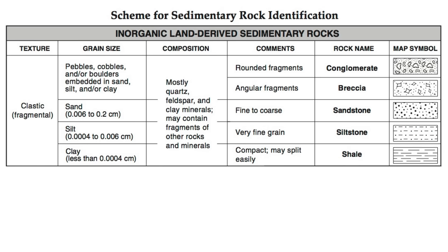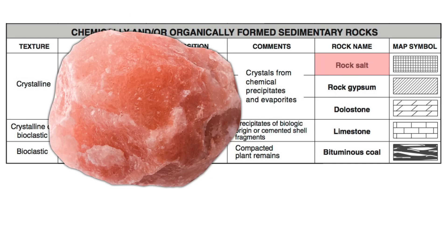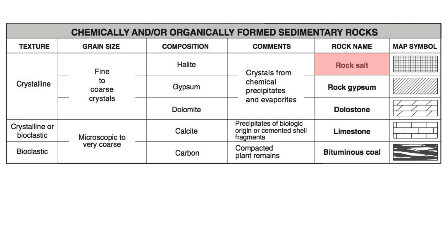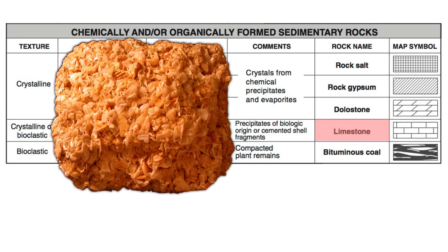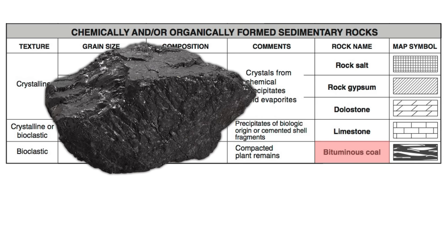We also have some other types of sedimentary rocks. Some of them are called crystalline, like rock salt. This is a rock that forms when you have minerals — in this case halite — dissolved in water, and then that water is given time to evaporate. When it evaporates, the water leaves but the crystals of the minerals that were dissolved in it stay behind, and you're left with something like rock salt. We also have bioclastic sedimentary rocks, for example limestone. Bioclastic rocks are made of living things stuck together — in this case, shells stuck together, called a coquina. Another example of a bioclastic rock would be bituminous coal, which is made from compacted remains of plants.